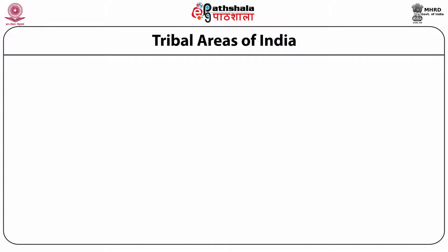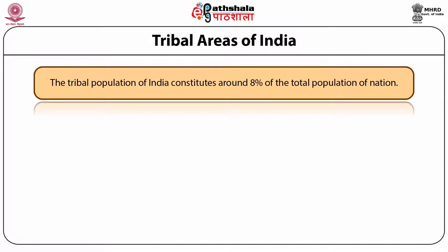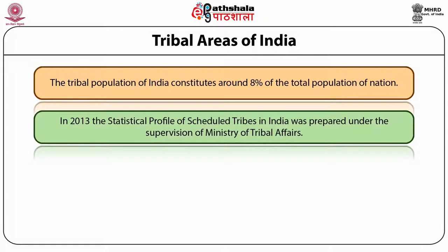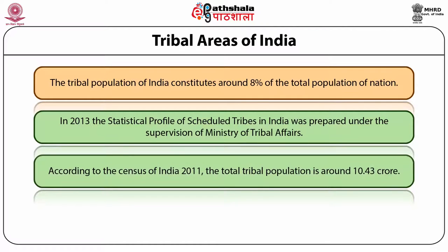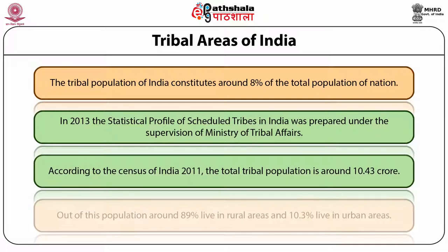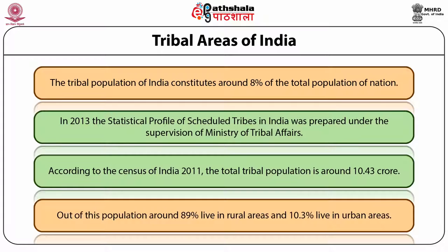Tribal Areas of India: The tribal population of India constitutes around 8% of the total population of the nation. The statistics division of the Ministry of Tribal Affairs keeps a record on the tribal population. In 2013, the statistical profile of scheduled tribes in India was prepared under the supervision of Ministry of Tribal Affairs. According to this profile, the number of scheduled tribes is 705. But according to the Census of India 2011, the total tribal population is around 10.43 crores, and out of this, around 89% live in rural areas and only 10.3% live in urban areas.